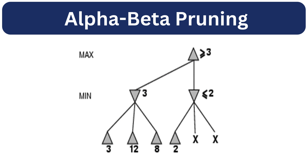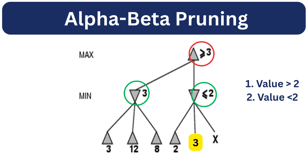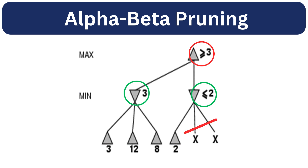Let's understand the pruning concept with a simple example. In this tree, let's see the first branch. Min picks the smallest value among 3, 12, and 8, which is 3. Max now considers 3 as its best option so far. Now look at the second branch on the right side. The first value in this branch is 2. Since min picks the smallest value, it might select a number even lower than 2. But here is the catch: if the next value is greater than 2, min will still choose 2 and will never select a higher value. But if the next value is less than 2, min will pick it — but max won't care because it already has a better option, which is 3. So we can move forward without looking at these two branches. This is called pruning. Because min will never pass a value greater than 2 and max only wants a number greater than 3, the remaining values do not matter.